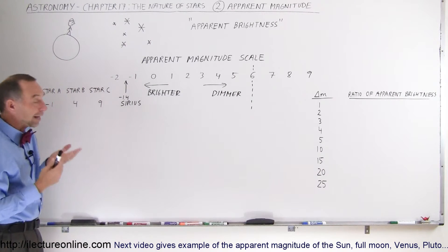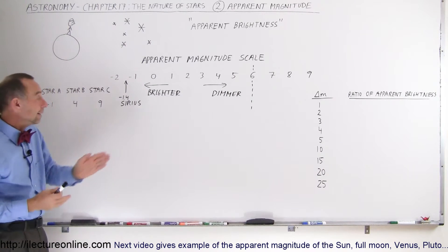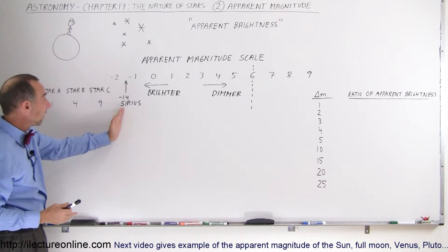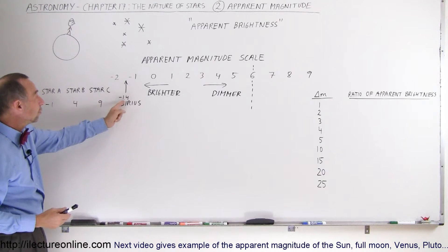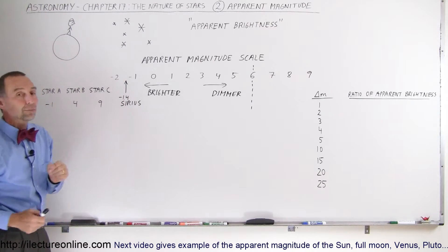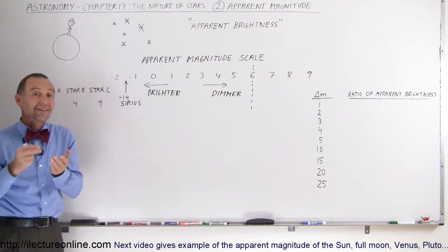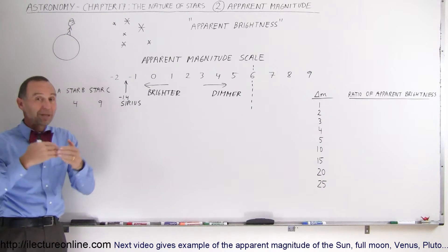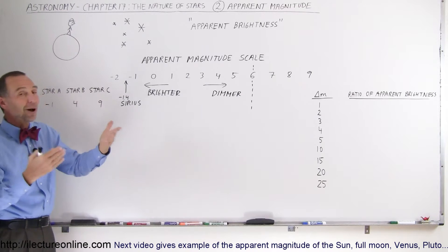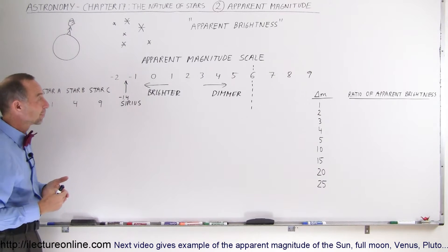It turns out that the brightest star in the sky, Sirius, has a magnitude of minus 1.4. And yes, a negative number means brighter than a positive number.